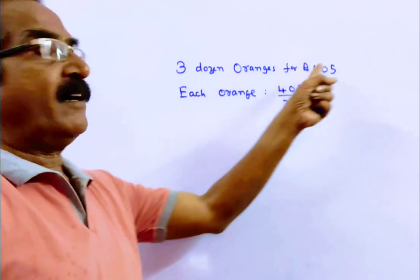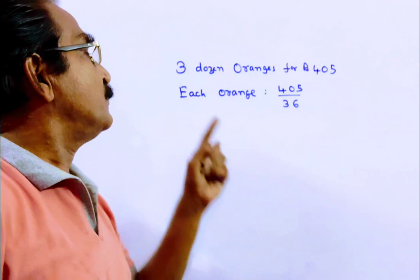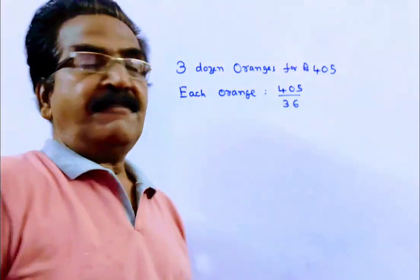Friends, 3 dozen oranges for Rs. 405, that means 36 oranges for Rs. 405. Then each orange selling price, 405 by 36. Friends,